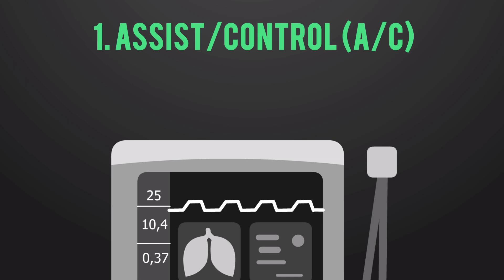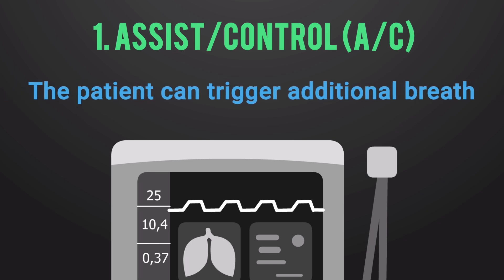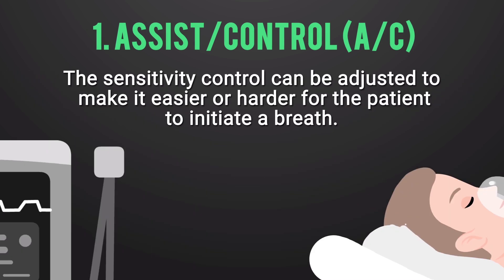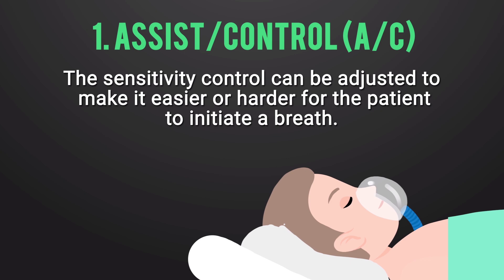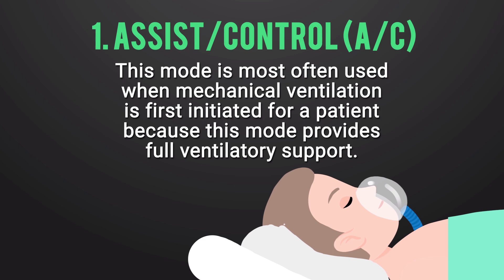That is where it gets its name — Assist Control — because the mandatory breaths are preset, which means they are controlled, but the patient can trigger additional assisted breaths. The sensitivity setting can be adjusted to make it easier or harder for the patient to initiate a breath. Assist Control is most often indicated when mechanical ventilation is first initiated, because this mode provides full ventilatory support.